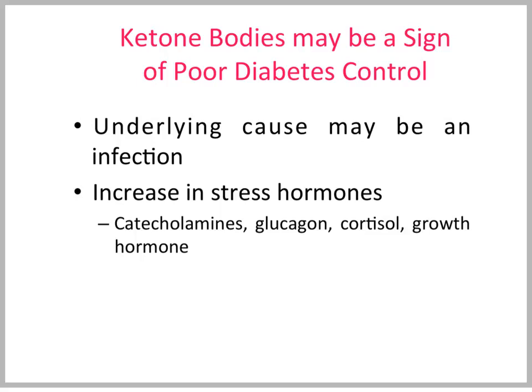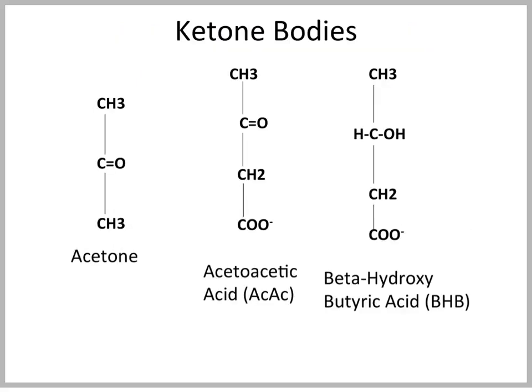When we look at diabetics and who is ketotic, usually the poorly controlled diabetics have ketone bodies. If an animal that has been well-controlled on insulin is no longer well-controlled, we usually find either a stressful situation with an increase in stress hormones, or many times an underlying infection. These are the ketone bodies: acetone, acetoacetic acid, and beta-hydroxybutyric acid.